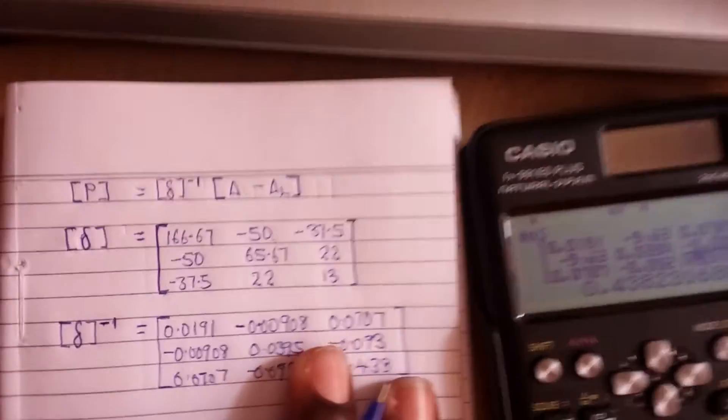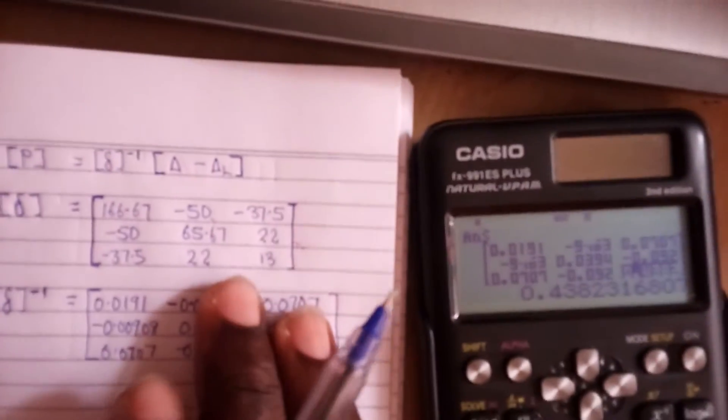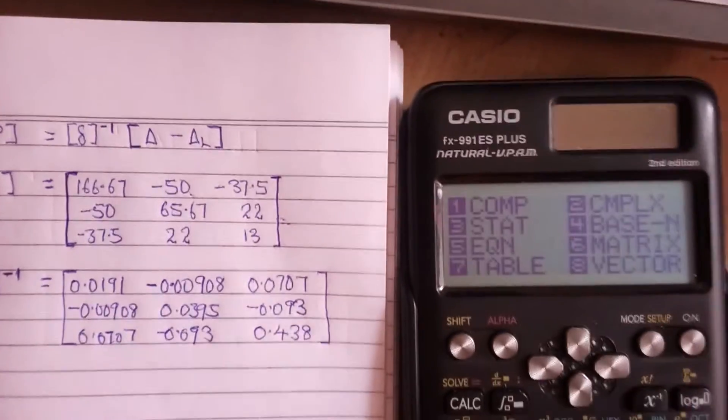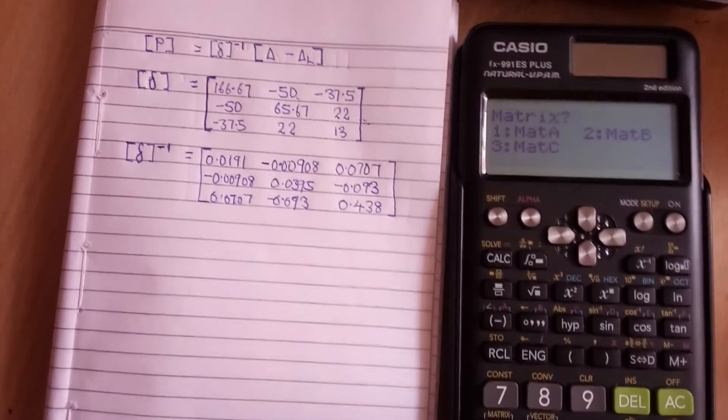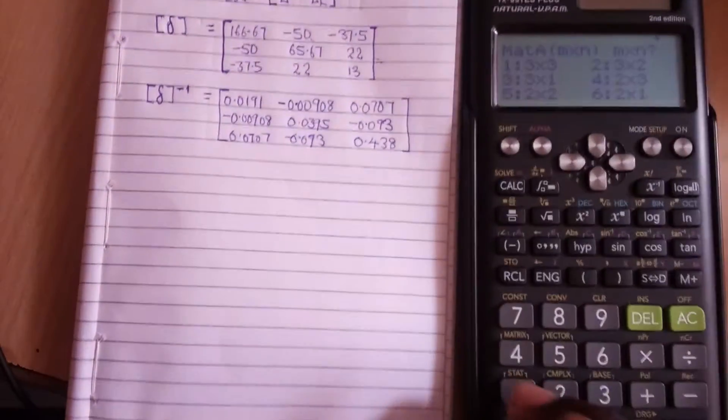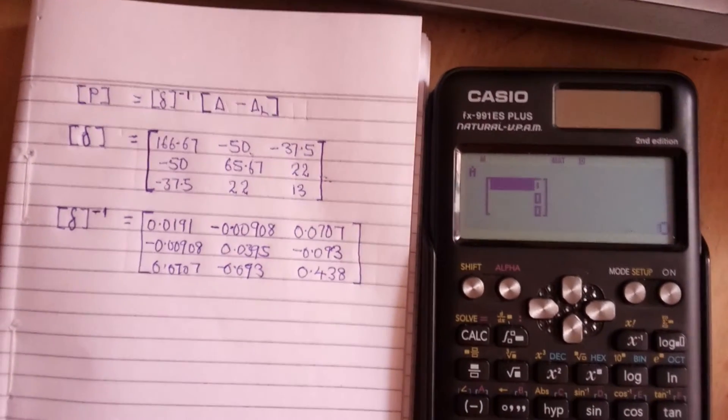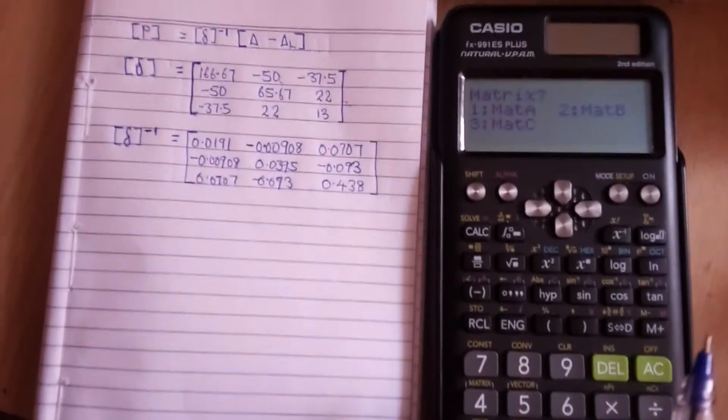So here I just wrote out the numbers from the calculator. That is just it. This is the inverse of these numbers. Now for me to check if my matrix was correct, I can go back to that matrix to see if I have actually typed it correctly. Press 6, then press 1.